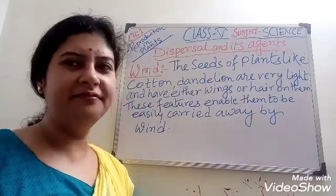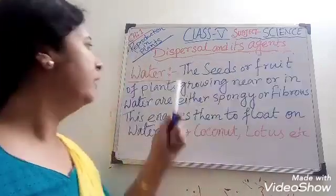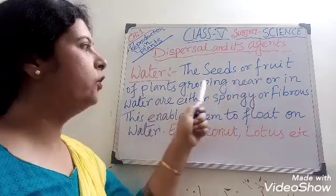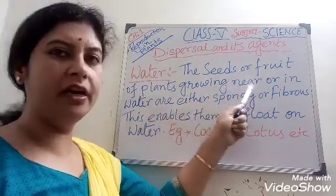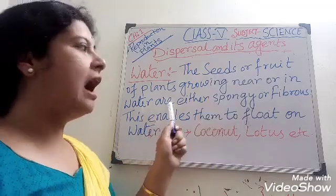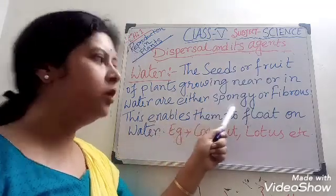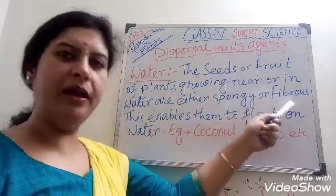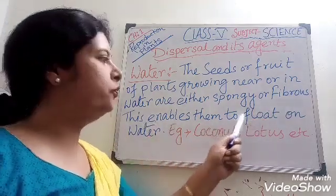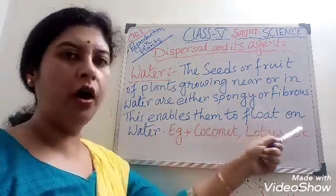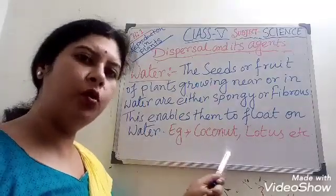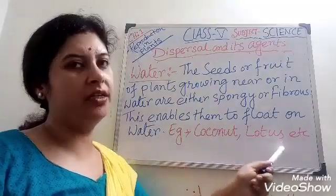The seeds or fruit of plants growing near or in water are either spongy or fibrous. This enables them to float on water. Example: coconut and lotus.